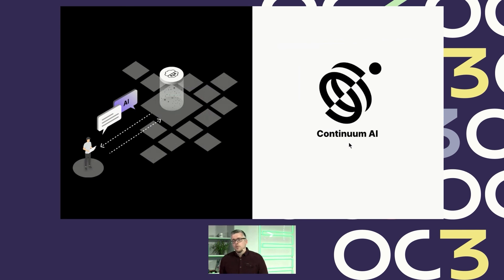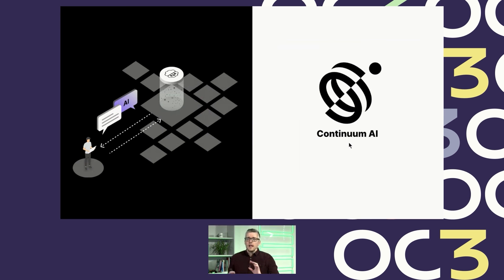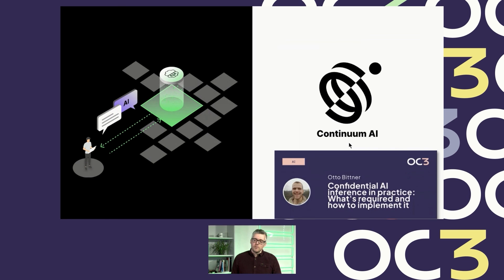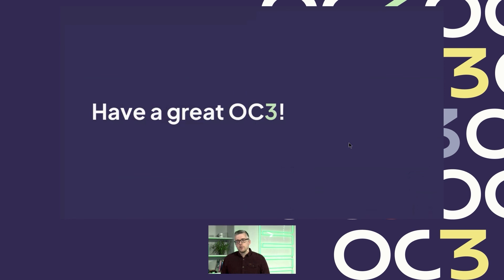I'd like to close with a second product announcement from Azure Systems. We are announcing Continuum AI, which is a framework for the creation of AI SaaS services where user prompts and model weights are protected at all times against both the infrastructure and the service provider. Imagine ChatGPT where you don't have to trust Azure and also not OpenAI. This is coming later this year as open source, and we are currently in a closed beta preview. There will be more details in a session later today. Thank you very much for joining and have a great OC3.